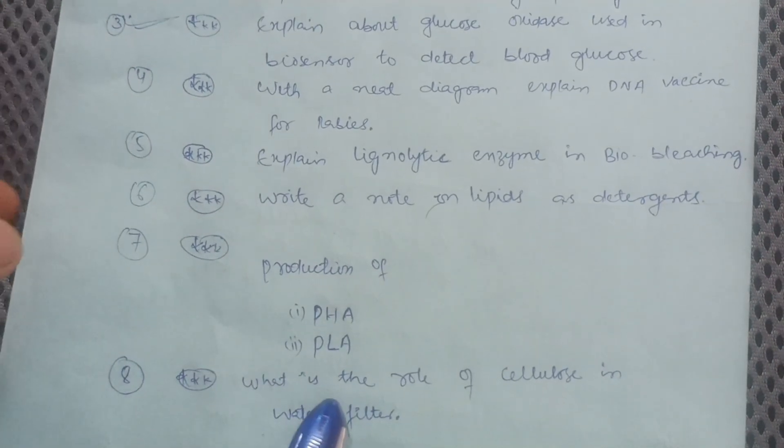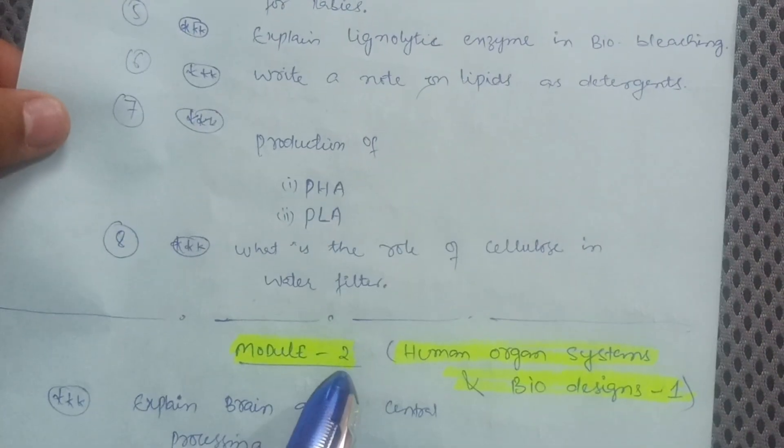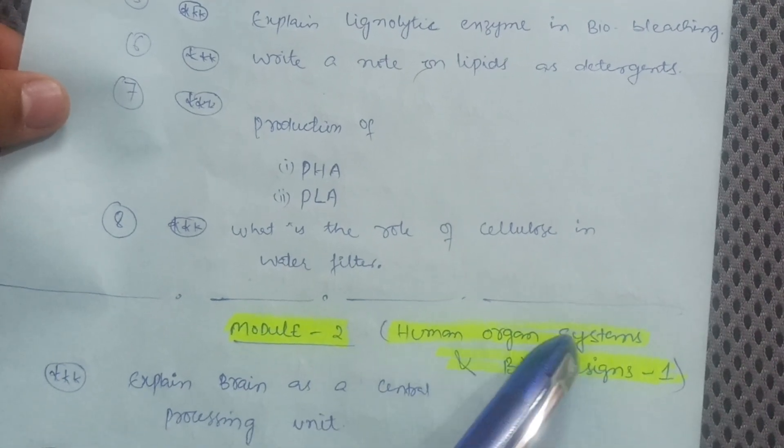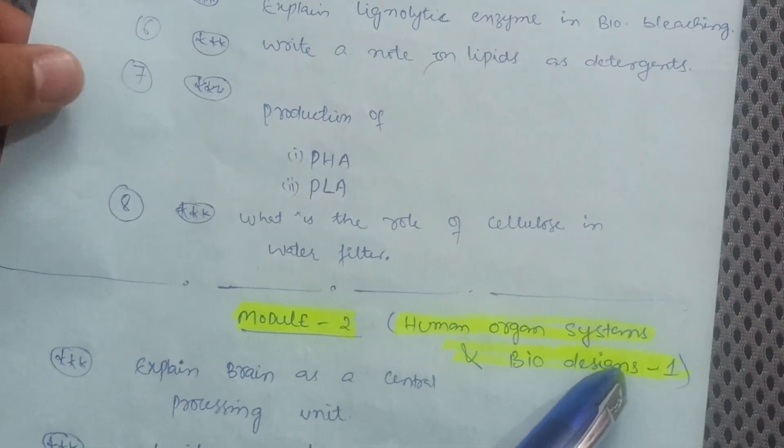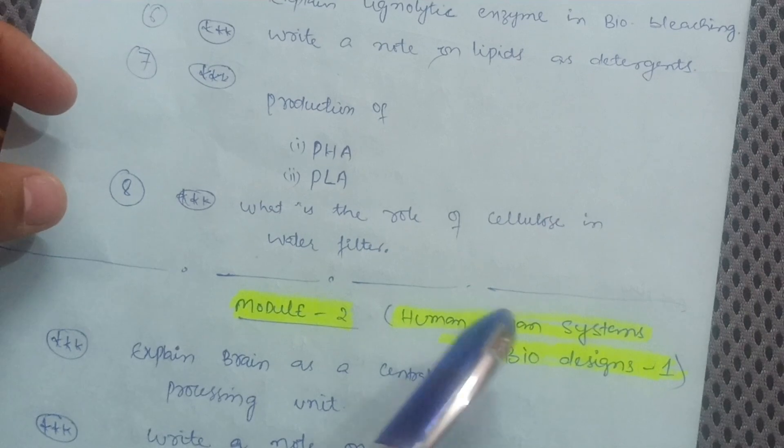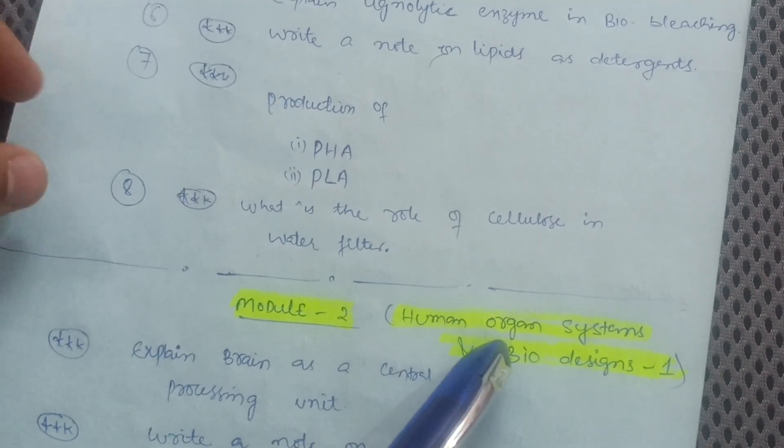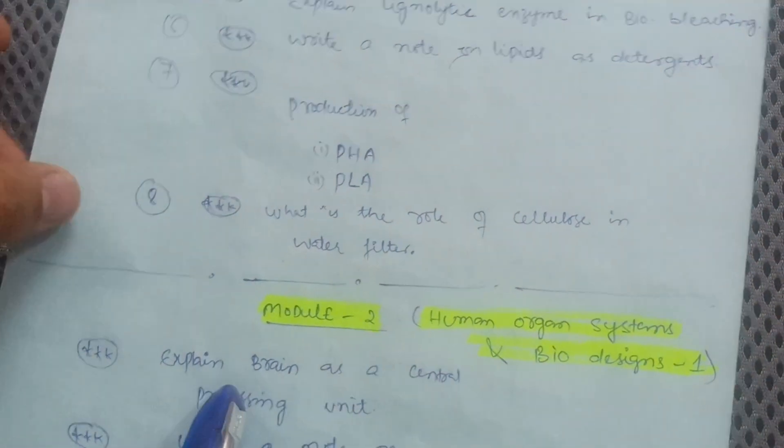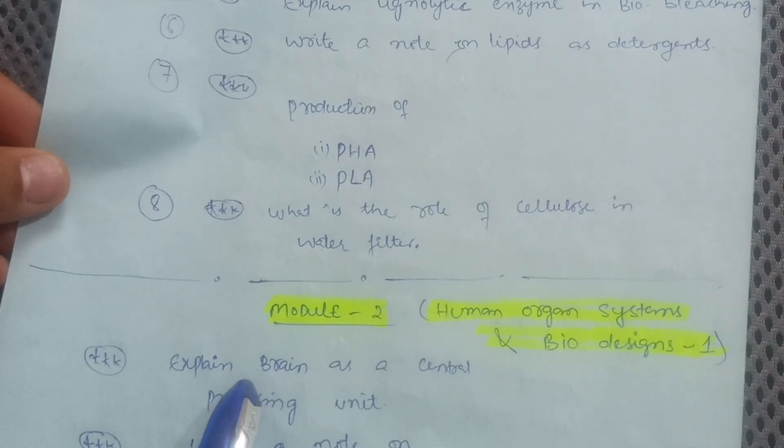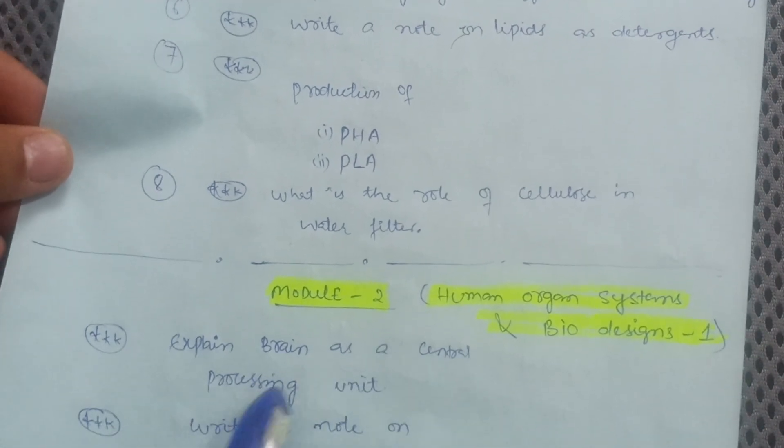Among eight, definitely five or six will be there in the examination part, I hope so. Next one is Module 2, that is human organ systems and bio designs. That is the first chapter, then the third module, second chapter of this particular human organ systems.